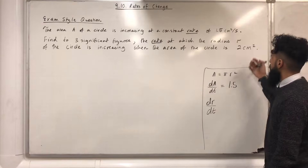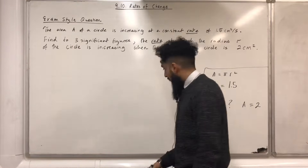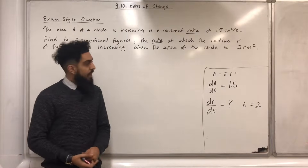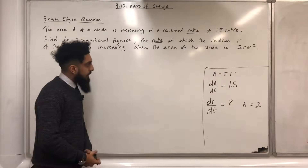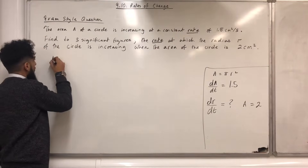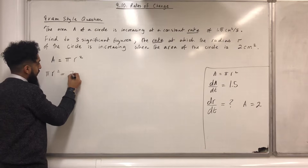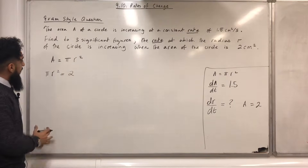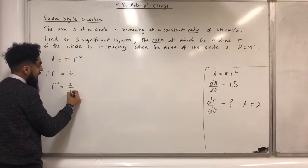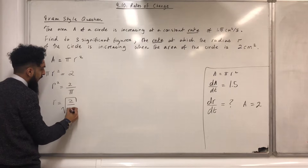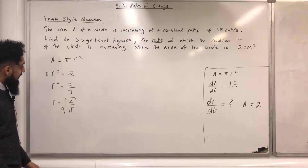We want dr over dt when A equals 2. Starting from A equals pi r squared, I substitute A equals 2: pi r squared equals 2, so r squared equals 2 over pi, therefore r equals positive square root of 2 over pi. We don't take the negative square root because r represents a radius, which is a length.